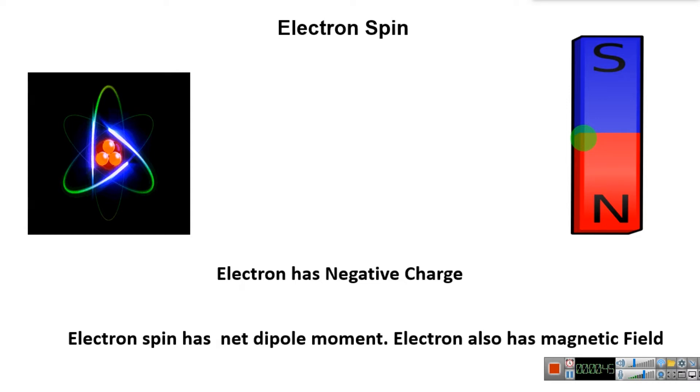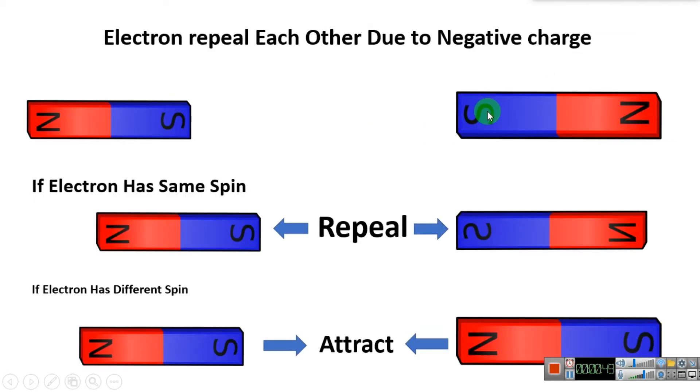Now, what are the consequences? The electron is already a negative charge. When we keep the electron in a bound region, they already start to repel each other because of the electron repulsion due to the negative charge.